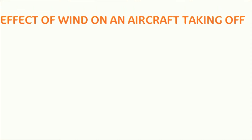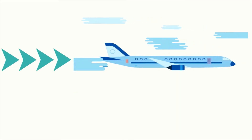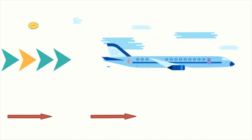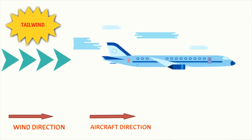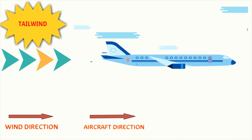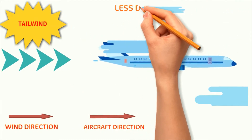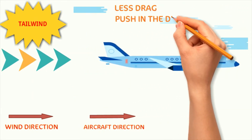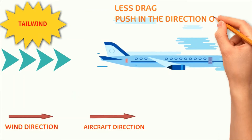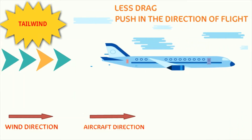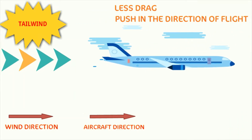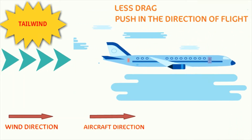Now let's understand the impact of wind on an aircraft in flight. It is always preferred to have tailwind when an aircraft is cruising, since tailwind produces less drag and pushes the aircraft in the direction of flight. Due to this, the aircraft will be able to reach the destination sooner.